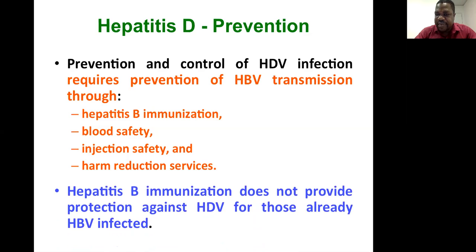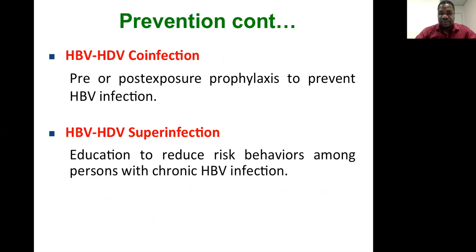Hepatitis B immunization does not provide protection against hepatitis D for those already infected with hepatitis B. If you already have chronic hepatitis B, you need to take precautions to avoid developing a super infection with hepatitis D, which would accelerate progression to cirrhosis and liver cancer. For co-infection prevention, pre- or post-exposure prophylaxis for hepatitis B is needed. For super infection, education must be strengthened to reduce risk behaviors in people who already have chronic hepatitis B infection.